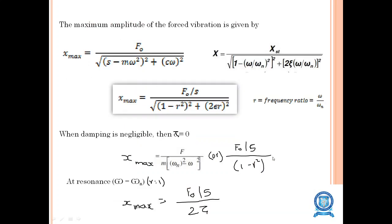The maximum amplitude of forced vibration is x_max equals f naught divided by s times root of [(1 minus r²)² plus (2ηr)²]. When damping is negligible, taking η equal to zero, x_max becomes f naught by s times (1 minus r²). At resonance, omega equals omega_n so r equals 1, and x_max equals f naught by s divided by root of 2η.